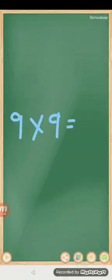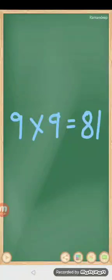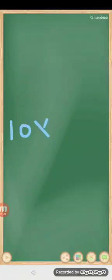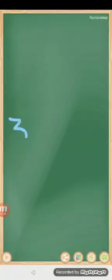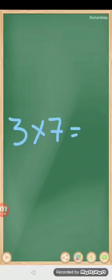Okay, ten fours are? Ten fours are forty. Good. Then three sevens are? Three sevens are, yes, it is twenty-one.